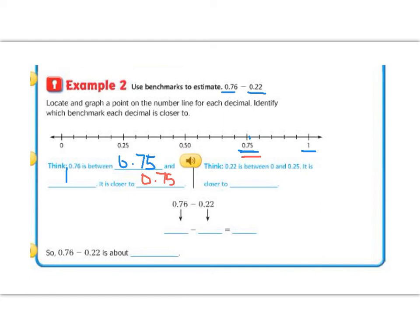Our next one is 0.22. 0.22 would be less than 0.25, but close to it. So it would be about here on the number line, 0.22. So it is between 0 and 0.25, but it is closer to 0.25. And now remember I take my two estimates and I subtract them. So 0.75 minus 0.25, so those are like quarters. If I have three quarters and I take away one quarter, that would give me two quarters, which would be 50 cents, 0.50. So the difference between 0.76 and 0.22 is 0.50.